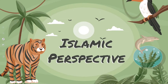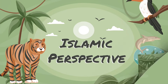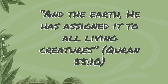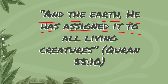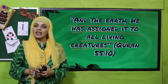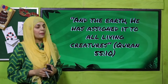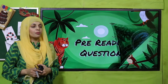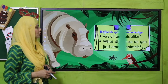From an Islamic perspective, Allah says in the Quran that the earth He has assigned to all living creatures. So my dear students, Allah Taala has made this earth for all living beings. Now we will move forward towards the pre-reading question.